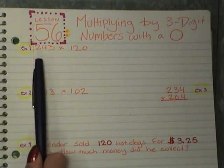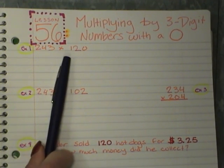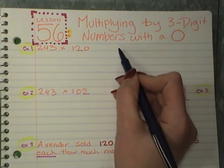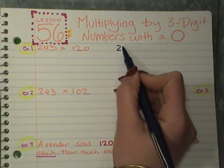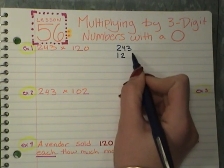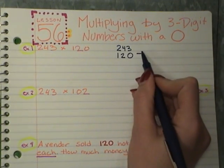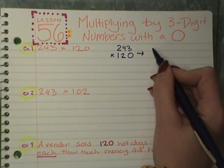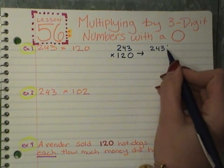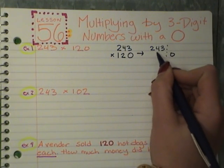The first number we have is 243 times 120, and like what you have normally been doing, I'm going to offset my zero, and it's going to make my problem so much easier. So I'm going to write it again, 243 times 120, but what you can make it look like, this would be your normal problem, is 243, and offset my zero, 120.